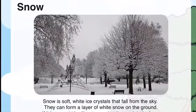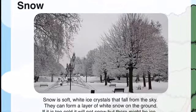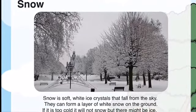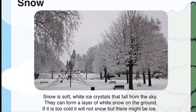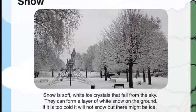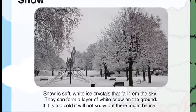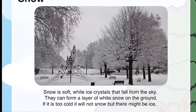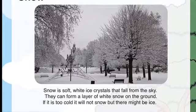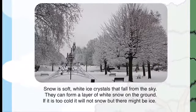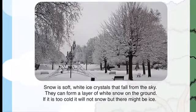Snow is soft white crystals that fall from the sky. They can form a layer of white snow on the ground. If it is too cold, it will not snow, but it will be icy.